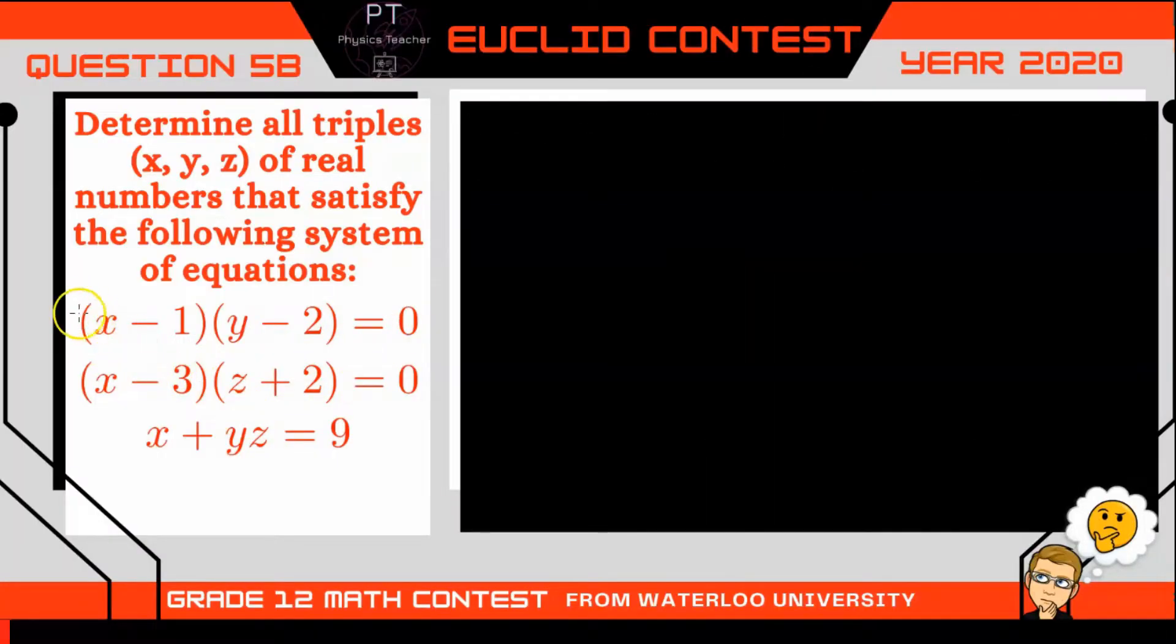All right, let's start by looking at this first equation here. This first equation we have two possible solutions: x could be equal to 1, that's one possible solution, or y could be equal to 2.